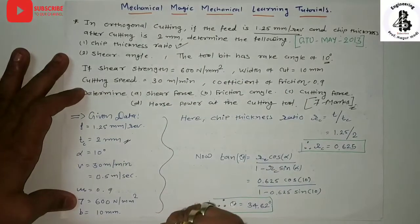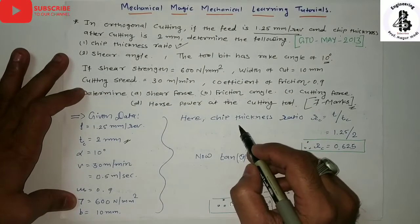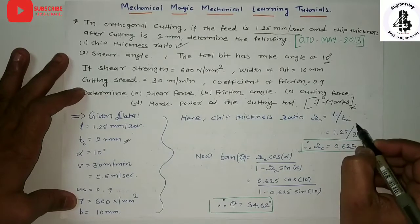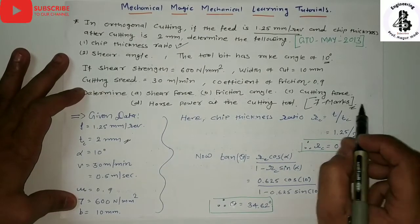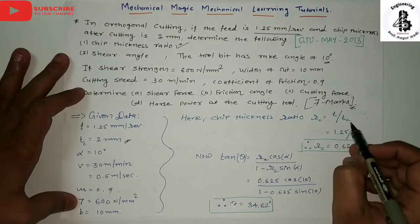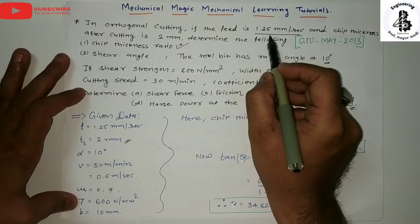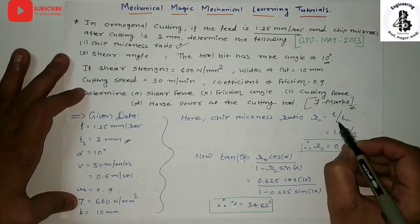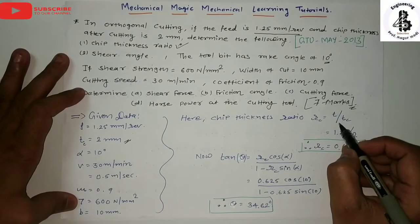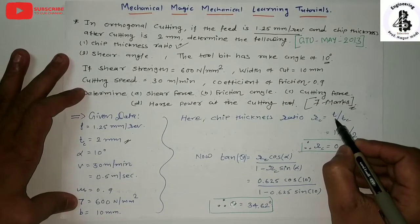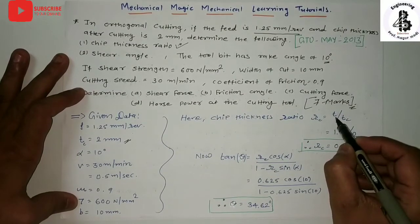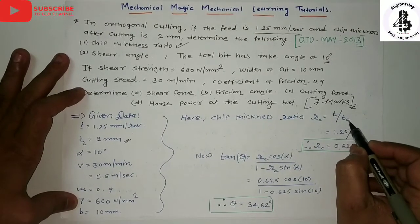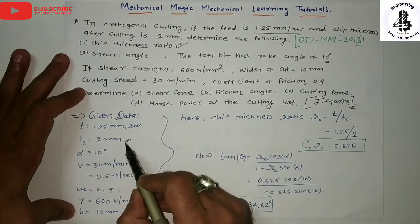Starting with the first one — the chip thickness ratio (cutting ratio). RC equals uncut chip thickness divided by cut chip thickness. In orthogonal cutting, the feed of 1.25 mm per revolution is considered as the uncut chip thickness T. So RC = T / TC = 1.25 divided by TC, where TC is 2 mm.